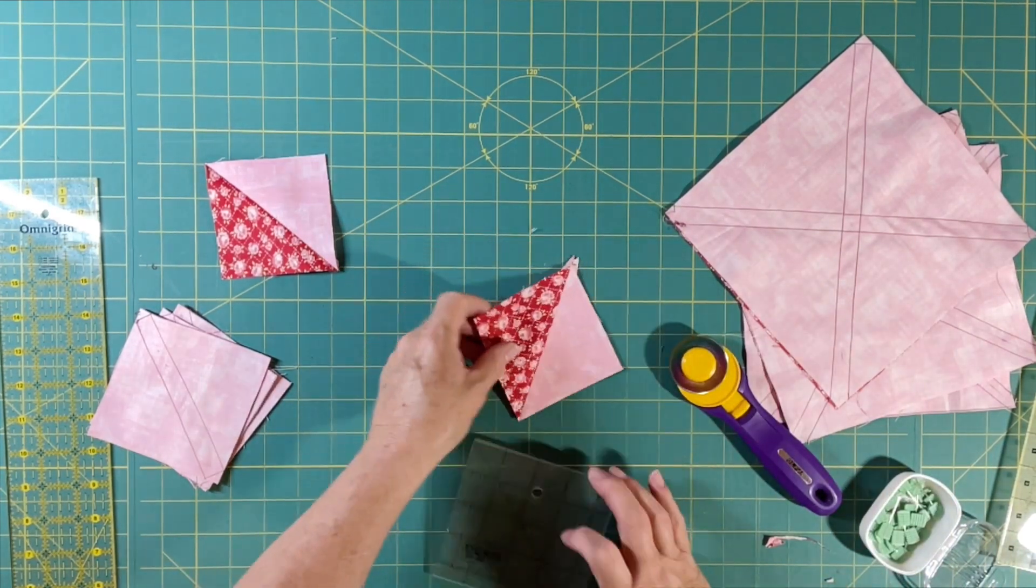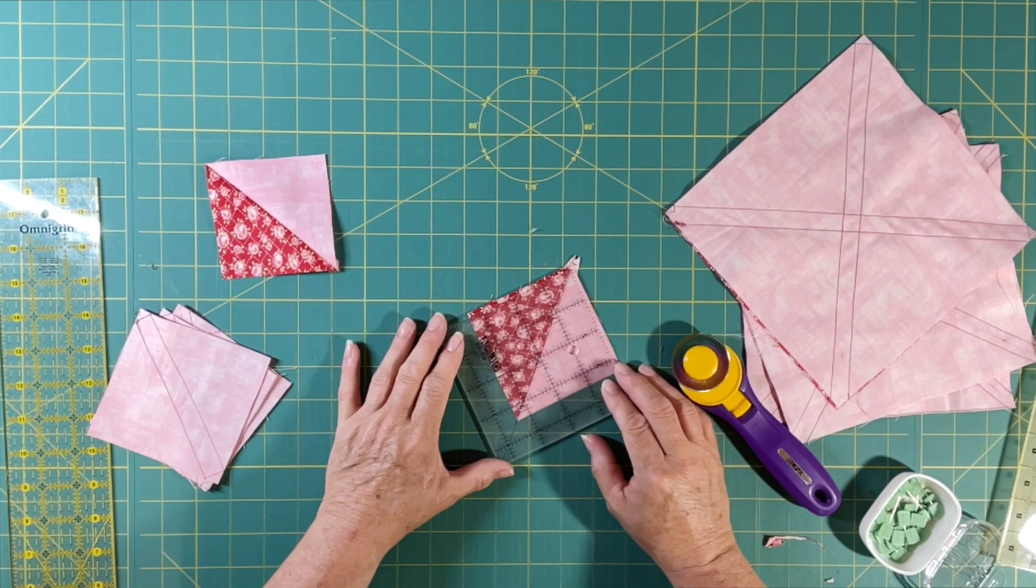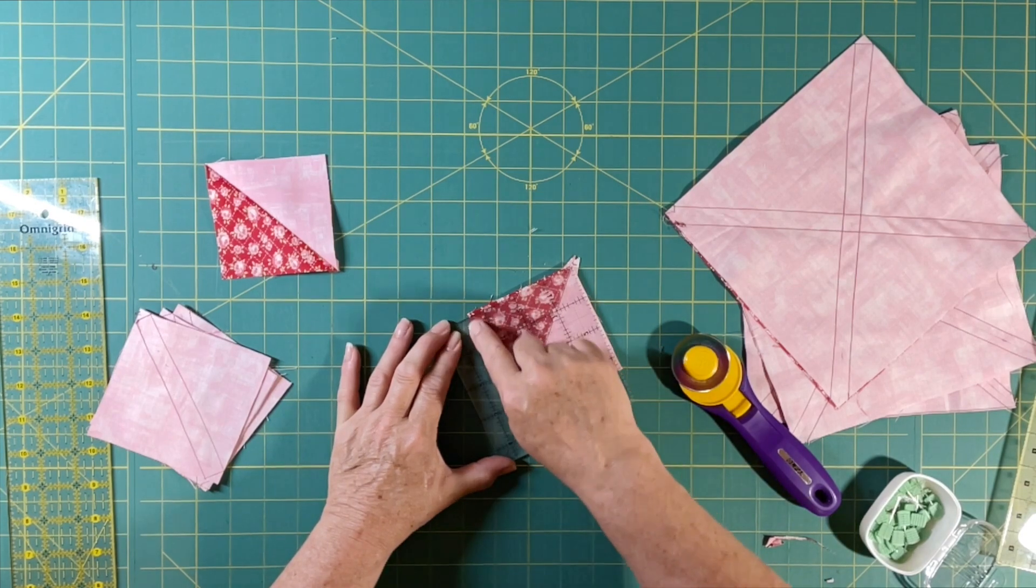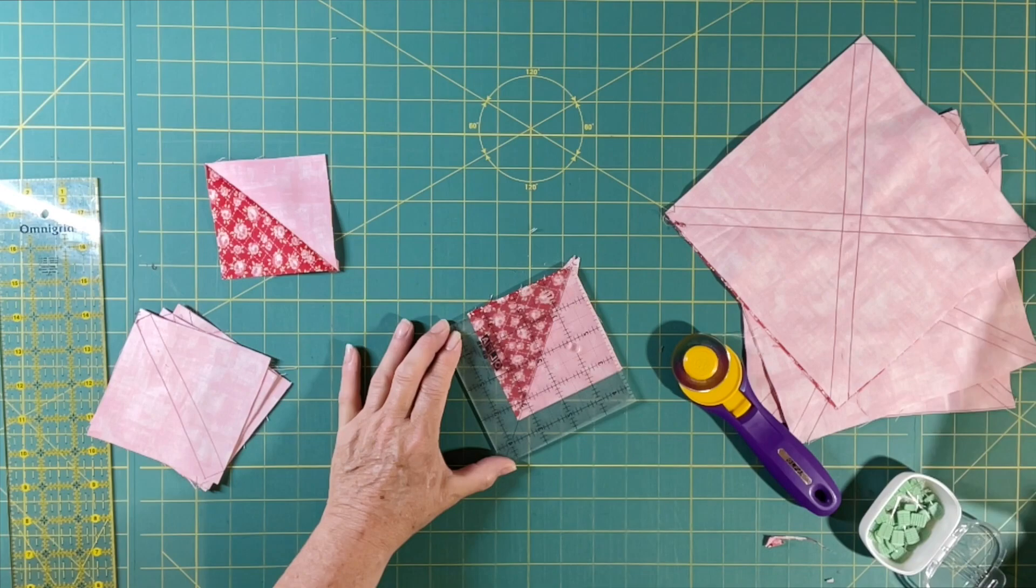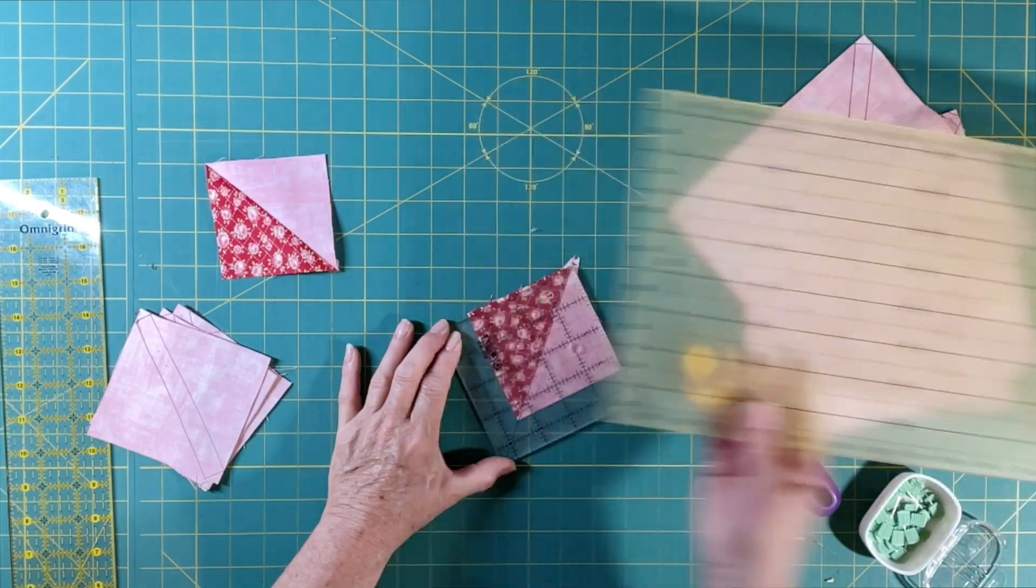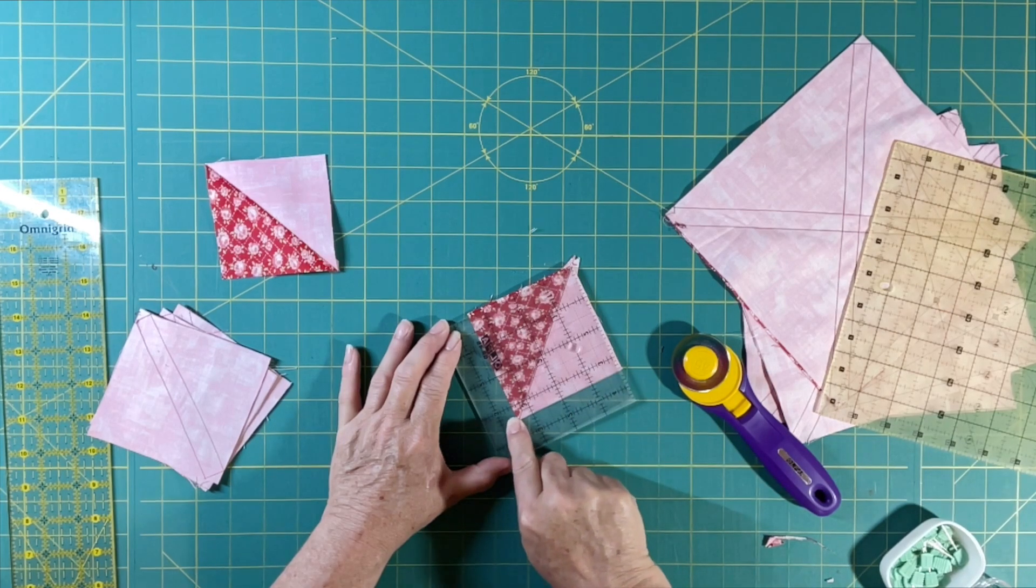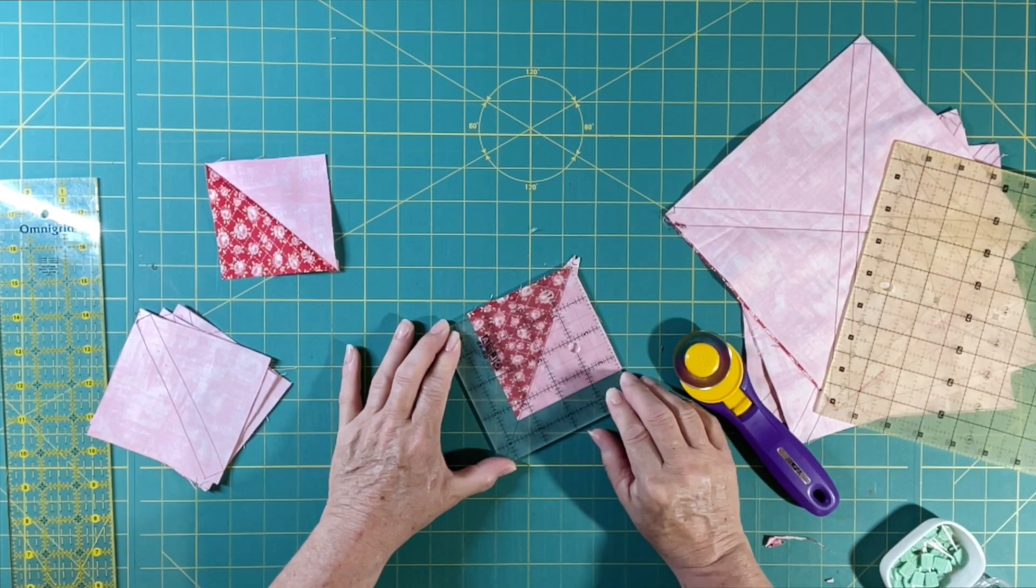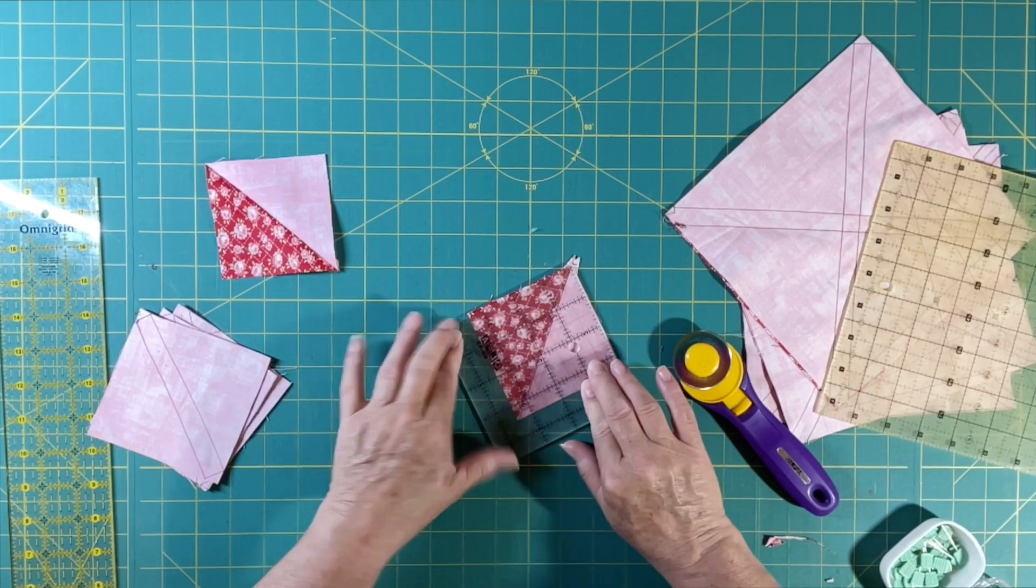And then turn it around this way and then actually put it on the three and a half inch mark right through here. If you have a much bigger ruler than this, like even a very large ruler, you can put some tape down on your three and a half inch right up next to that three and a half inch mark and then you'll be able to see through it easily.